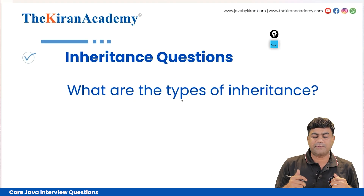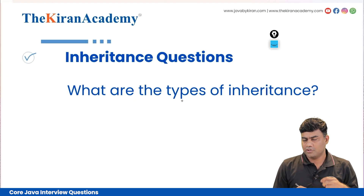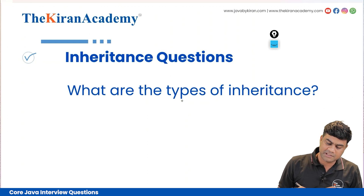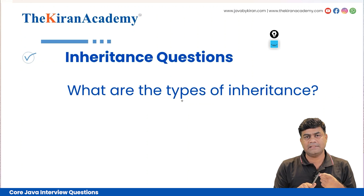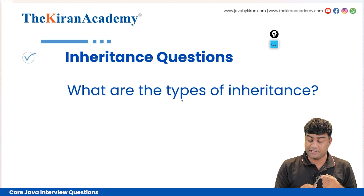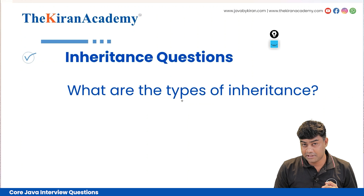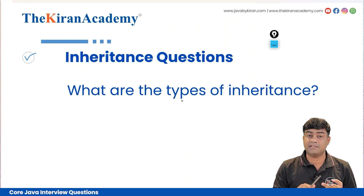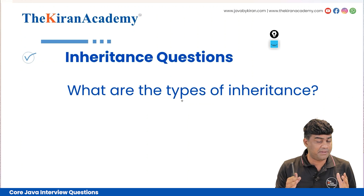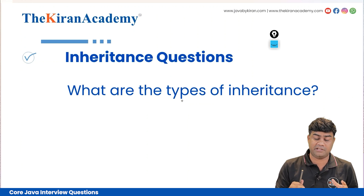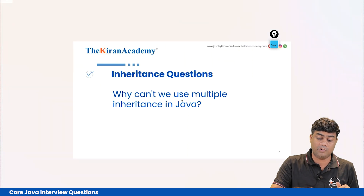What are the types of inheritance? The types are: single inheritance, multi-level inheritance, multiple inheritance, hierarchical inheritance, and hybrid inheritance. These are the five types of inheritance that everyone should know.